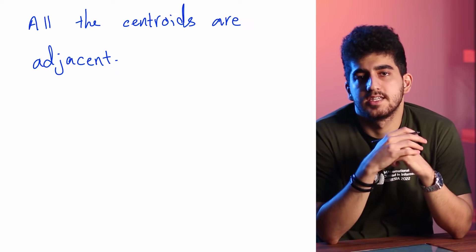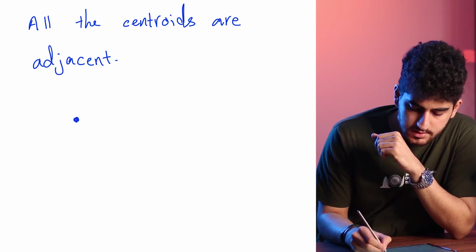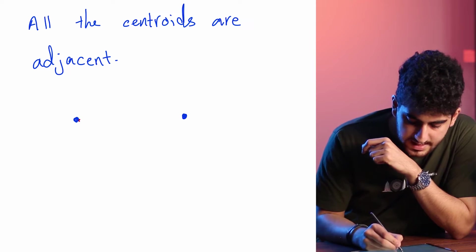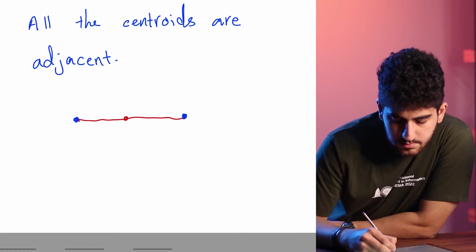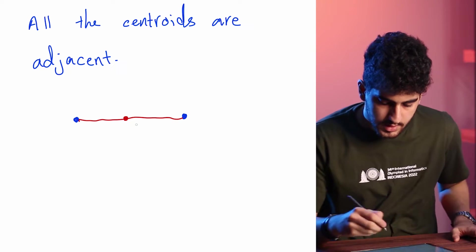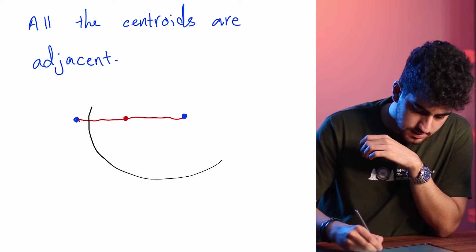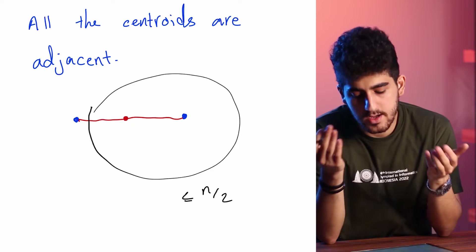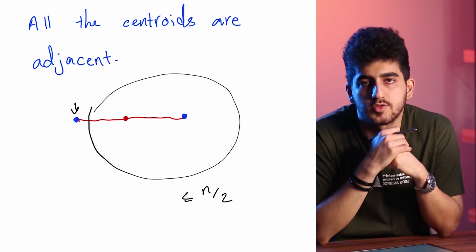I'll prove that by contradiction. Assume that we have two centroids and they are not adjacent. Then I can say that if I consider the path between these two vertices, there is at least one vertex in this path, because if there weren't any vertex then these two vertices were adjacent. So if I consider this path, I know that the number of vertices in here is at most n/2. Why? Because this vertex is a centroid and if I remove it, this connected component will have at most n/2 vertices.